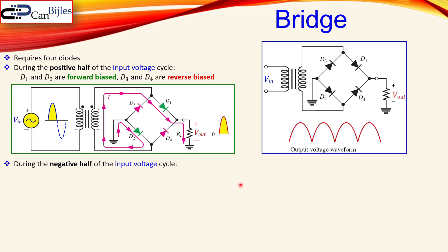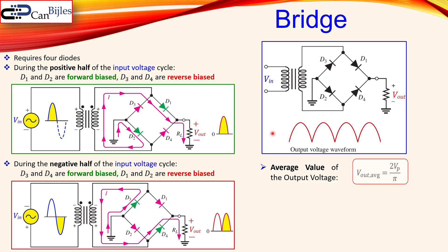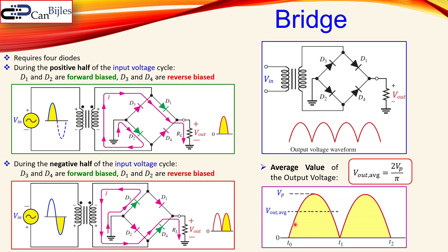For the negative half of the input cycle, D3 and D4 are forward biased and conducting, while D1 and D2 are reverse biased. The negative peak of the input voltage passes through this bridge circuit configuration, but the output will again be in the same direction. So we get exactly the absolute value of the input at the output, and the average value of the output voltage is given by two times the peak value over pi.